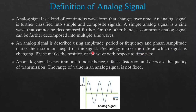Frequency marks the Rate at which the Signal is Changing. Frequency equals 1 divided by Time — this is the Frequency of 1 Cycle. Where 1 Cycle is completed is Time T0, and 1/T0 is the Frequency. Phase marks the Position of the Wave with respect to Time 0. In our waveform, the Starting Point of the Analog Signal is from 0. But if our Starting Point is at the Maximum Point, then it has some Phase Displacement, which is represented on the graph.